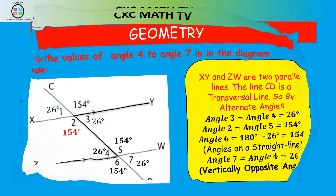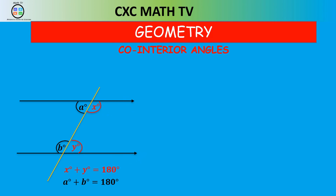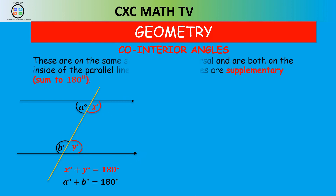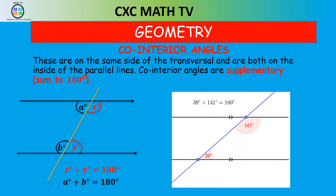The next law is co-interior angles. These are on the same side of the transversal and both inside the parallel lines. Co-interior angles are supplementary — they add up to 180 degrees. On the transversal with the two parallel lines, angle A plus angle B equals 180. On the other side, x plus y also equals 180. In our diagram, angle 2 plus angle 4 is 180, and angle 3 plus angle 5 is 180, both by co-interior angles.